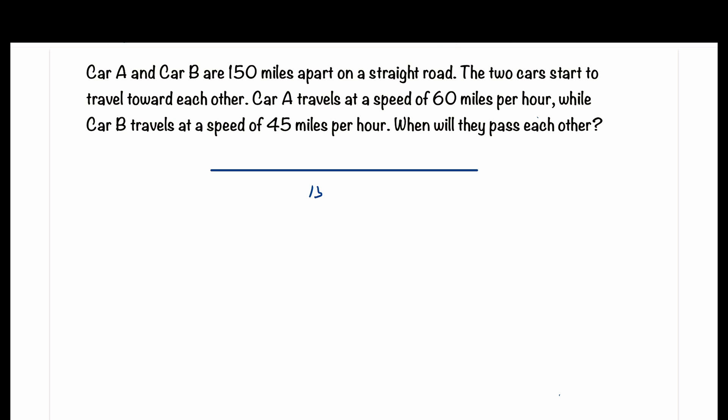This line represents the 150 miles. We have Car A going 60 miles per hour and Car B going 45 miles per hour. Car A is going this way and Car B is going this way.